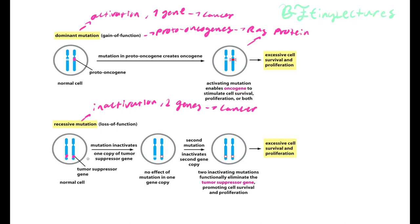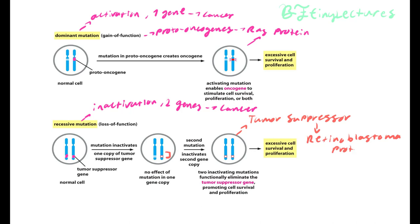For the recessive mutation, we have to deactivate both genes. If I only deactivate one gene, I don't have cancer. But if I deactivate both genes, the cancer will spread. You find these types of mutations within tumor suppressors. A good example of a tumor suppressor is the retinoblastoma protein, which stops cell division. Whenever we deactivate the retinoblastoma protein, we have a higher chance of getting cancer. A recessive mutation is the deactivation of both genes — two inactivating mutations functionally eliminate the tumor suppressor gene and promote cell survival and proliferation.